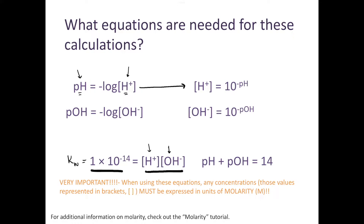We can also calculate the pOH of a solution, which gives us an indication of the hydroxide ion concentration. Just like pH equals the negative log of our hydrogen ion concentration, pOH equals the negative log of our hydroxide ion concentration. Rearranging these equations gives us that pH plus pOH equals 14. Also remember that concentrations in brackets must have units of molarity or moles per liter.